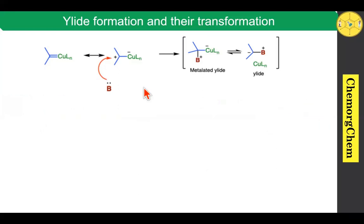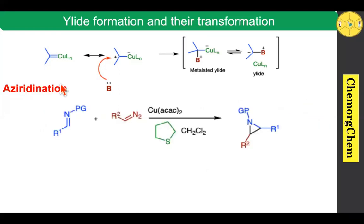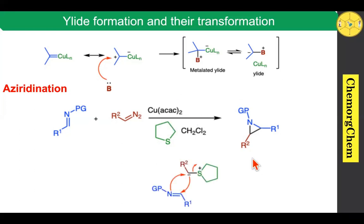Just like epoxidation, azetidine formation is also possible. When you take an imine and react with the diazo compound in the presence of copper acetylacetonate and tetrahydrothiophene, it produces the corresponding azetidine compounds through this ylide formation reaction.